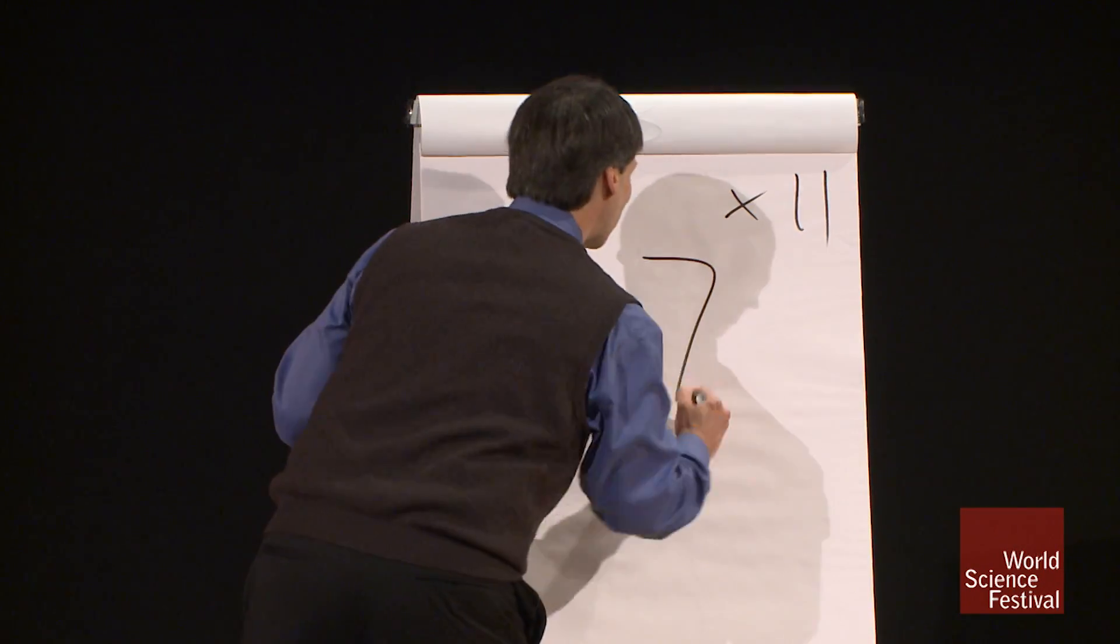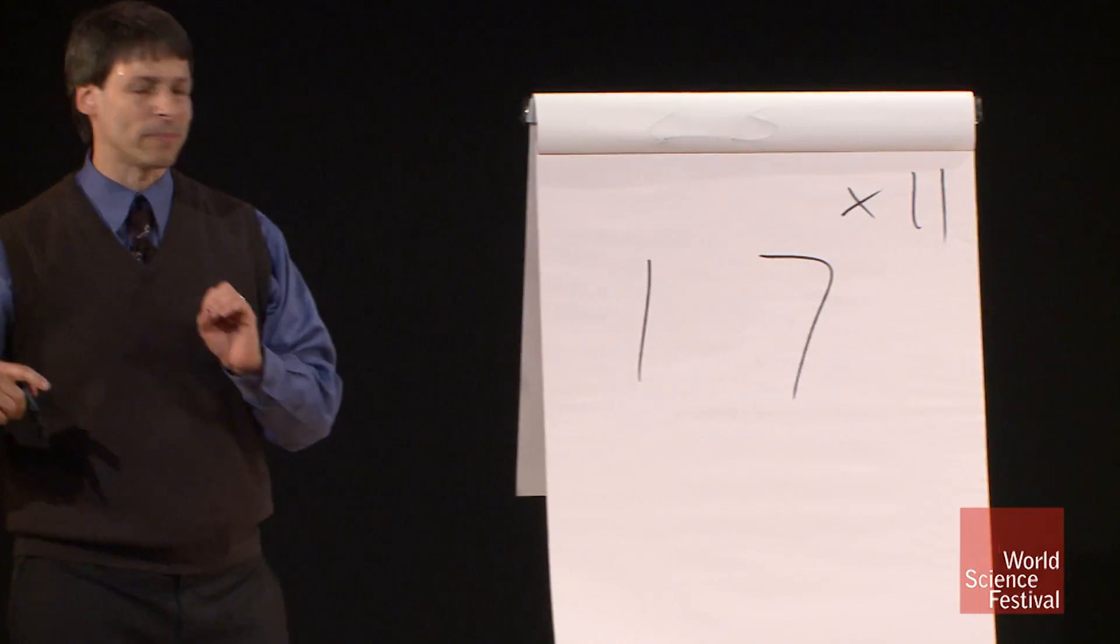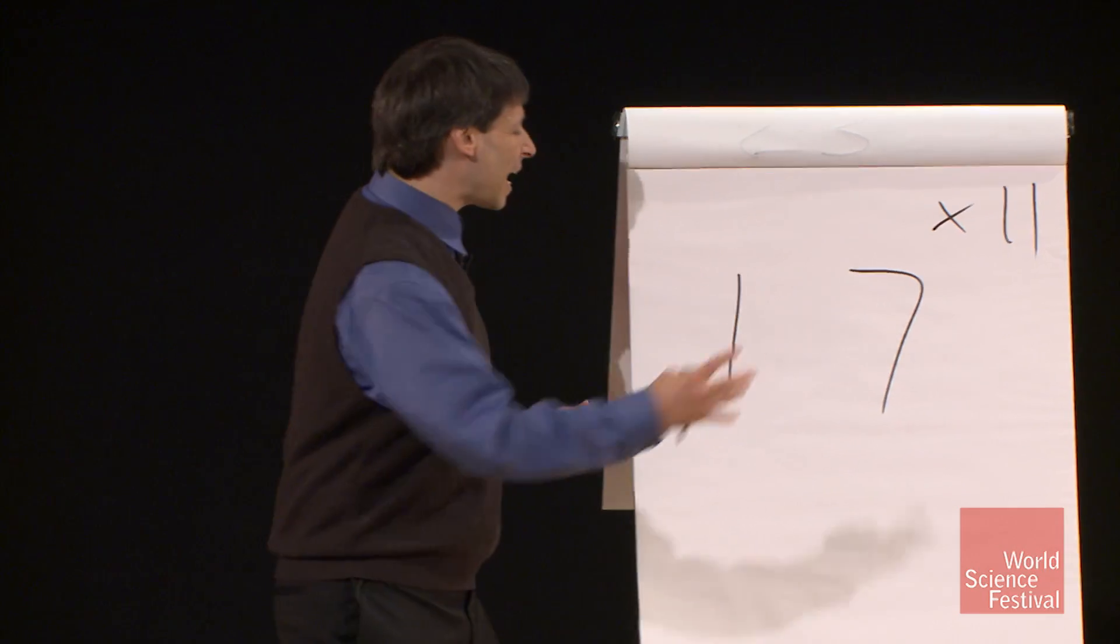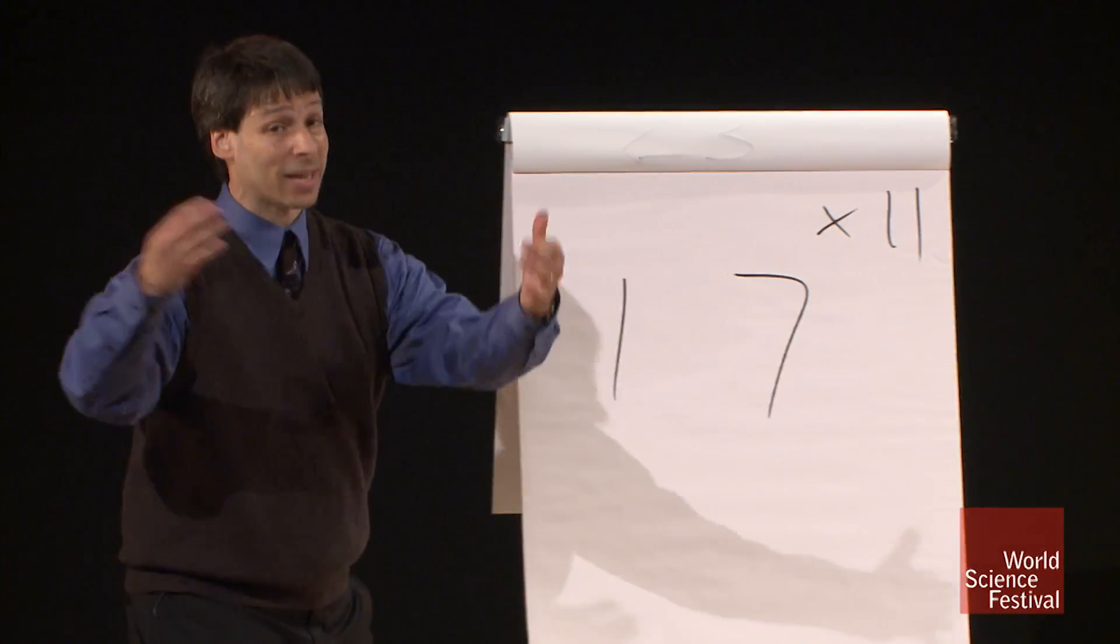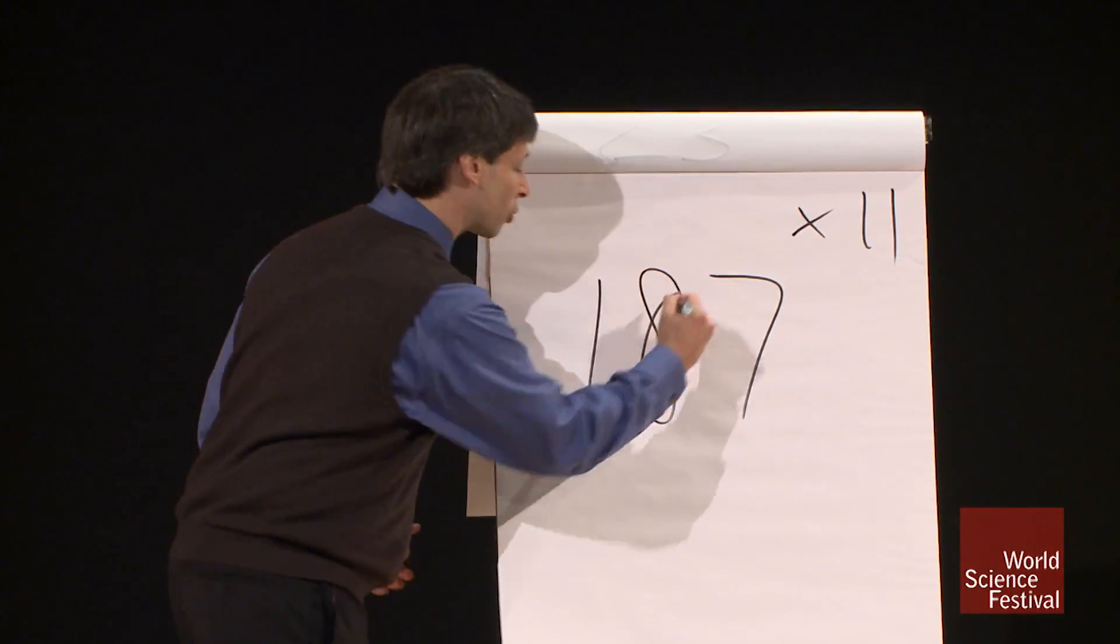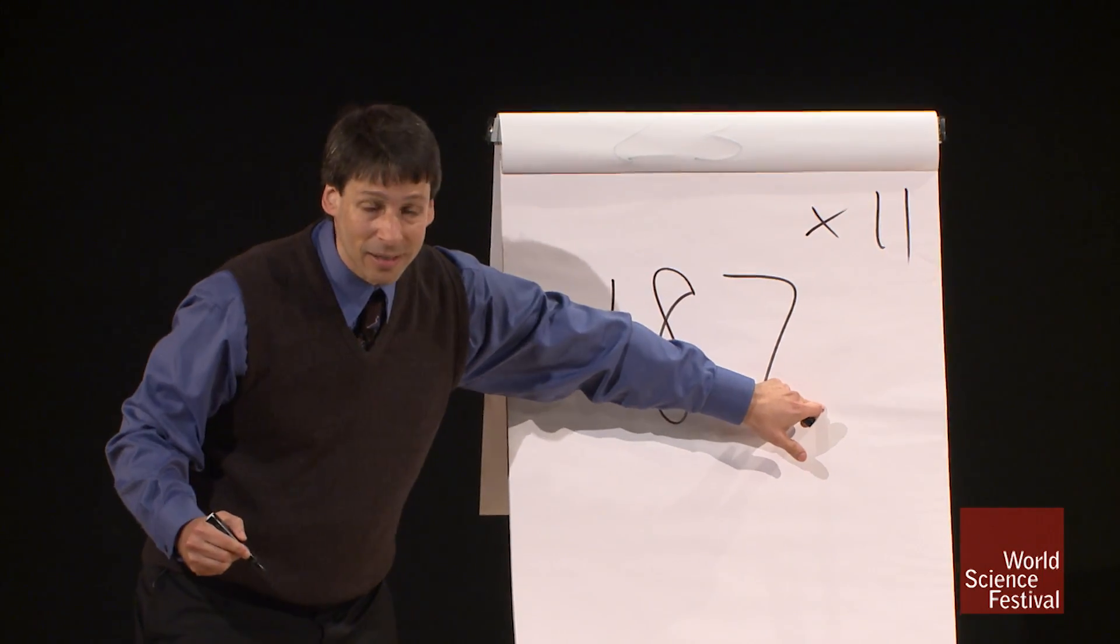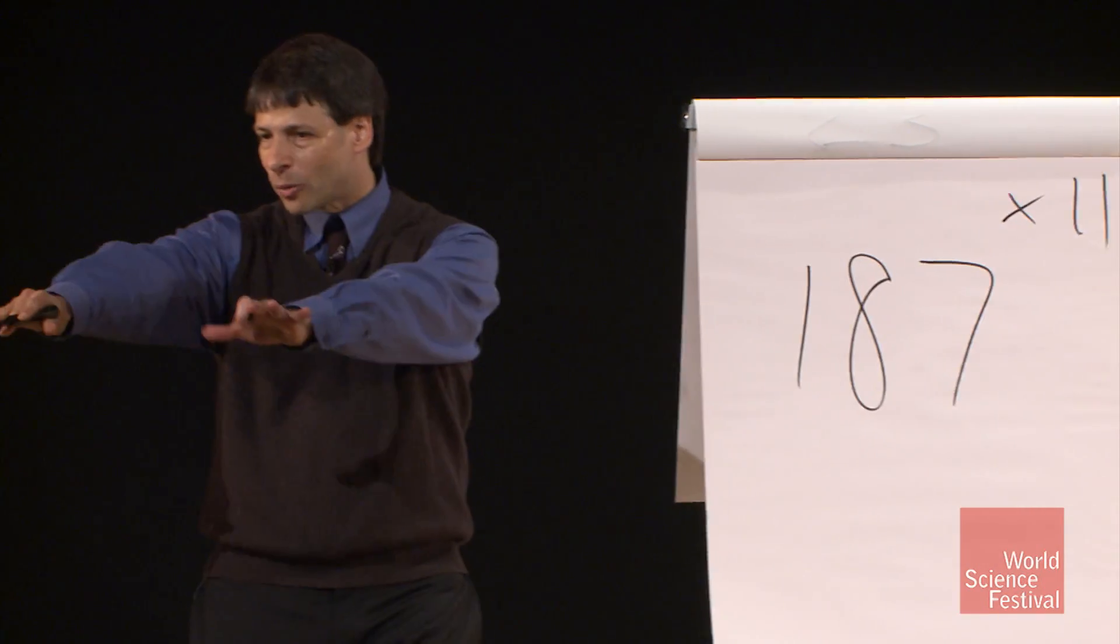Seventeen. Okay, 17 times 11 is as easy to do as 1 plus 7. 1 plus 7 is 8, and there's your answer, 1, 8, 7. I told you it was easy.